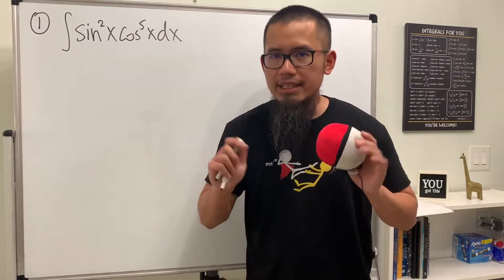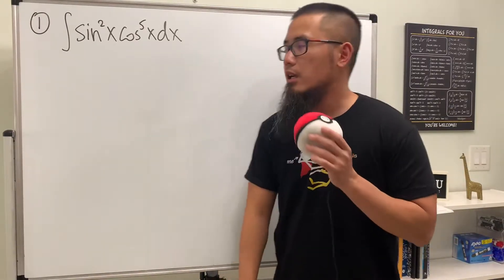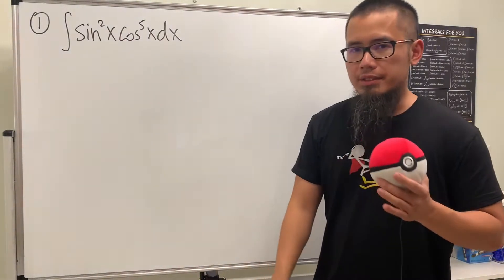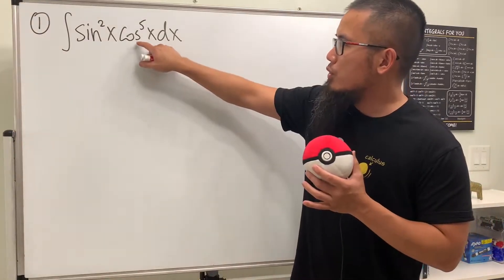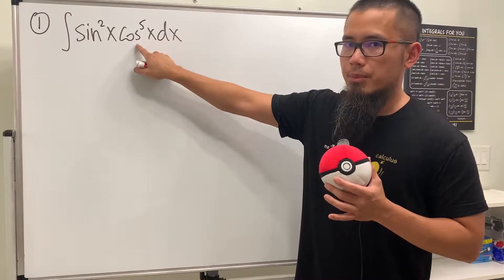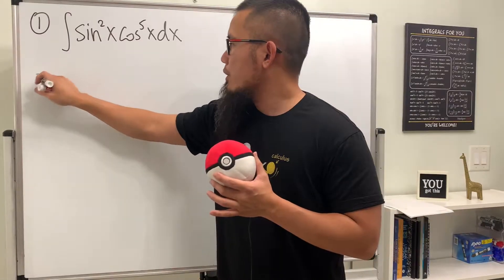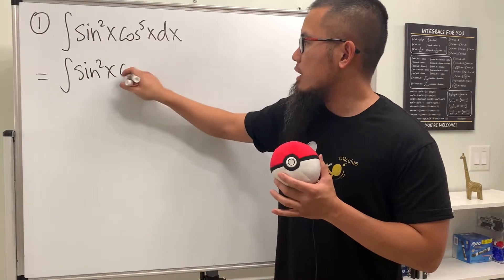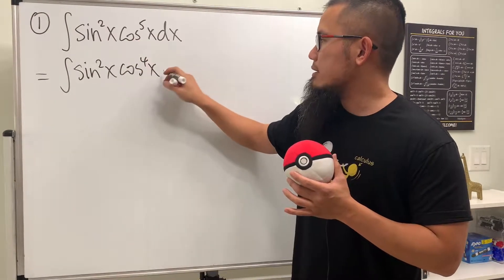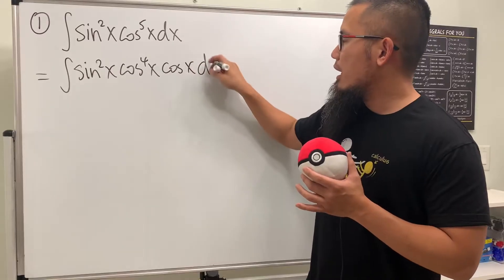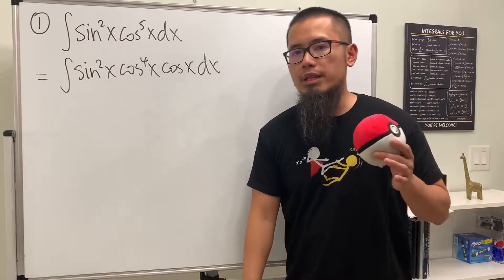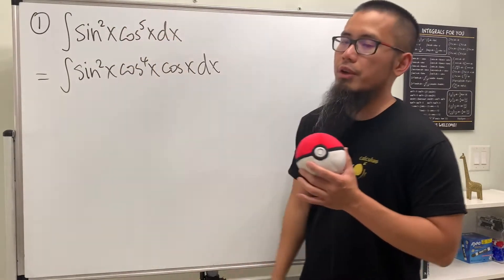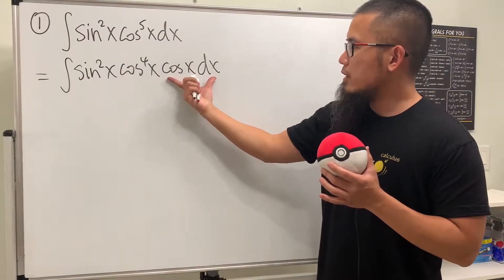In this video we'll be going over eight integrals that have sine and cosine. For the first one we have the integral of sine squared x times cosine to the fifth power x. Pay attention to cosine to the fifth power x — we are going to break this apart. We'll look at this as sine squared x times cosine to the fourth power x times cosine to the first power x. That's the usual strategy when dealing with a product of sine and cosine with powers — we save a cosine x factor.